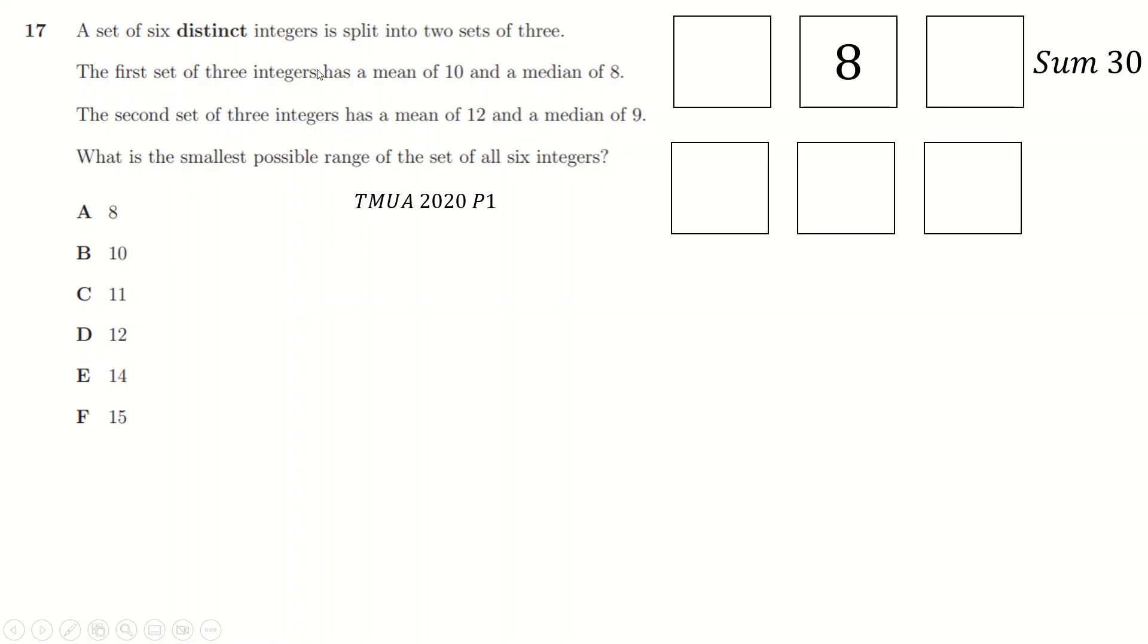The first one has a mean of 10, which means its sum is 30, because each one may as well be 10, sum is 30, and median of 8. Second one, a mean of 12 means the sum is 36, median of 9. Interesting.